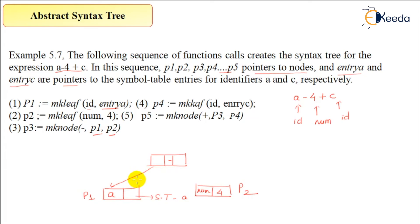Now there is p4 which will have a makeleaf as id. The label is id and this will point to the symbol table with entry for c.